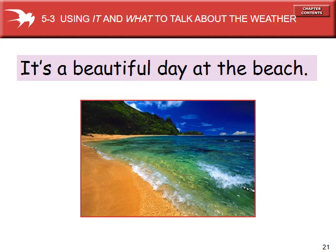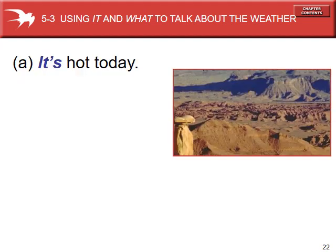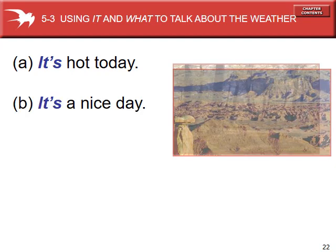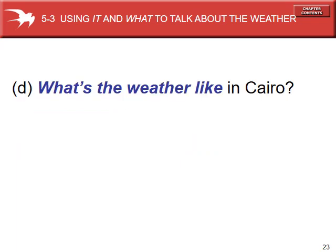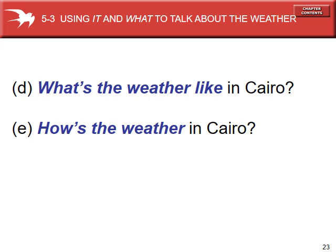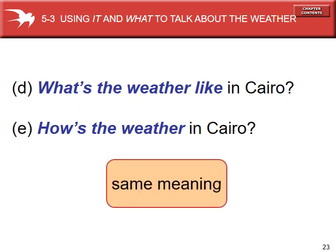The other thing that "it" is used for is to talk about the weather. For example: it's a beautiful day at the beach — here "it" refers to what the weather is like. We can say it's hot today, it's a nice day, it's cold and rainy today. In all of these cases, "it" is referring to the weather. Keep in mind that in English we have to use "it" in these sentences — in some other languages you don't have to, but in English you do. There are two ways to ask about weather: "What's the weather like in Cairo?" or "How's the weather in Cairo?" Both have the same basic meaning.